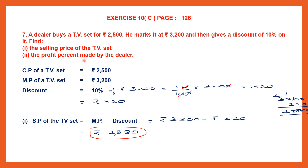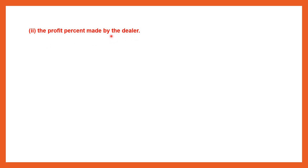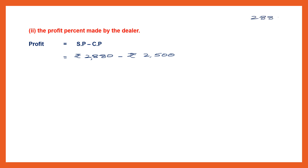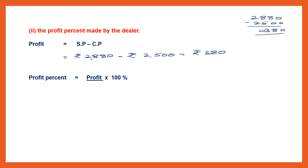The next thing we have to find is the profit percent made by the dealer. To find the profit percent, first we have to find the profit. Profit is selling price minus cost price. Selling price is Rs. 2,880, minus the cost price already given in the question, Rs. 2,500. So 2,880 minus 2,500 gives us a profit of Rs. 380.